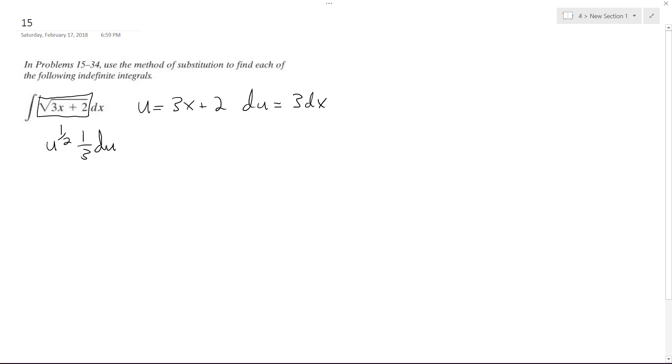The reason why it's set up to 1 third is because I needed to make dx. I moved over the 3, so it became 1 third du is equal to dx, so therefore I can directly substitute it into the equation.